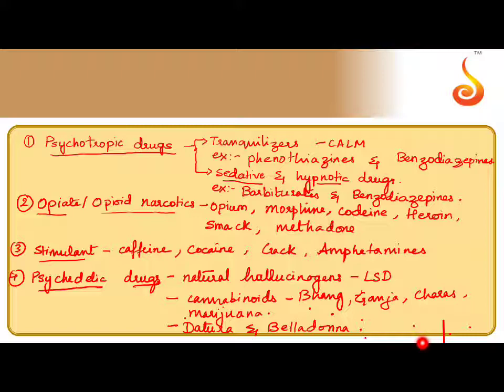The next type of drug is opiate or opioid narcotics. These are sub-classified into opium, morphine, codeine, heroin, smack, and methadone. Opium is discussed in greater detail in your textbook. Opium is extracted from a plant called poppy, whose biological name is Papaver somniferum.